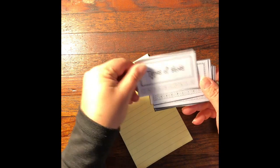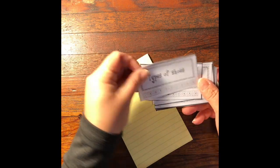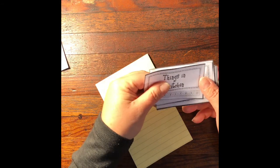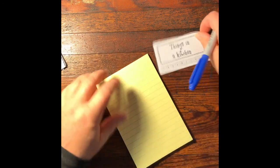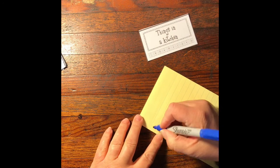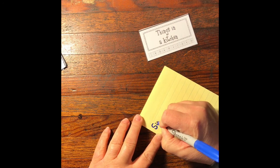You're going to first pick out what card you'd like to do. I'm going to pick things in the kitchen. I'm going to start listing items that I would find in the kitchen.